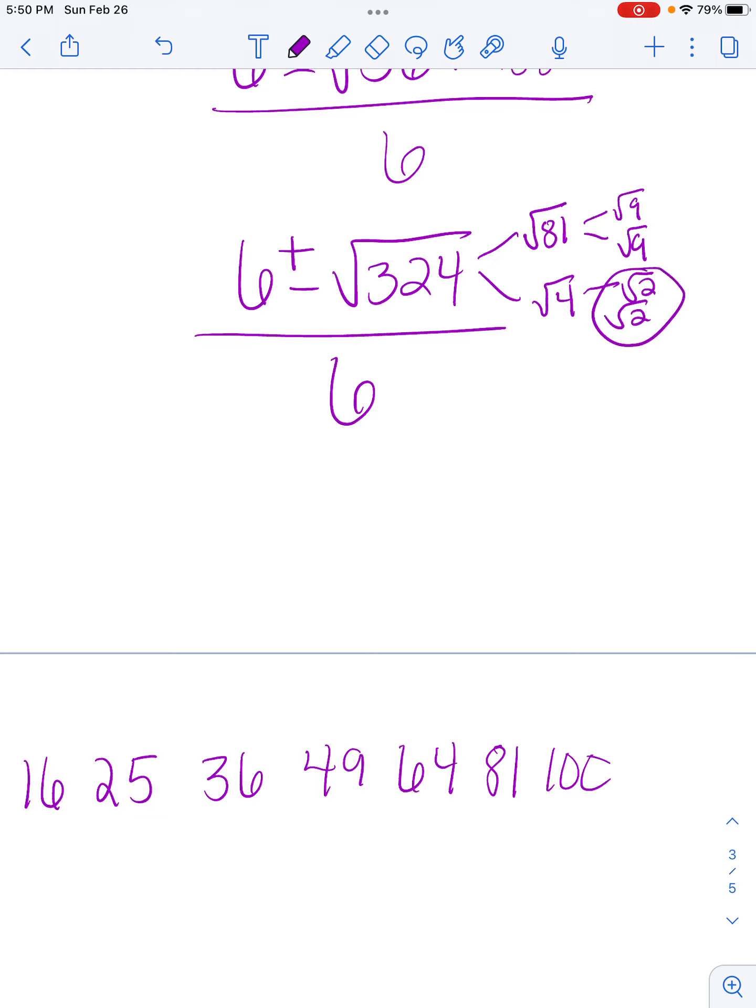So I can pull a 9 and a 2 out of this. So I bring down here 6 plus or minus, and they're whole numbers so I'm going to put 9 times 2 over 6.